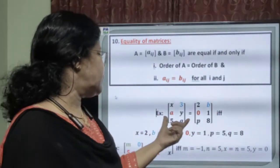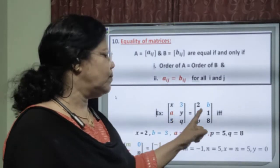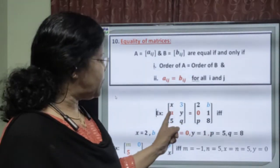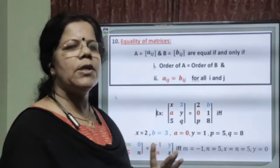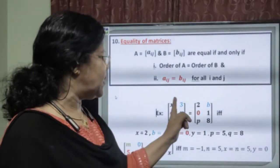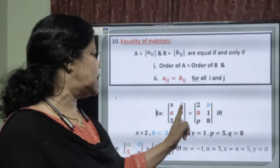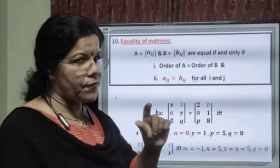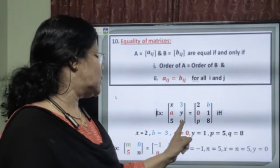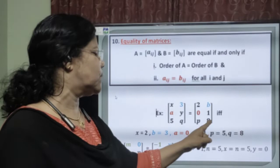Here is one example. These two matrices are equal. We know this is of order 3 by 2 and this is also of order 3 by 2, so the order of A equals the order of B. Now, equating corresponding elements: x equals 2, b equals 3, a equals 0, y equals 1, p equals 5, and q equals 8.